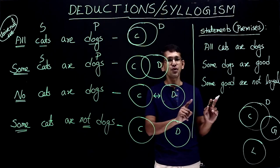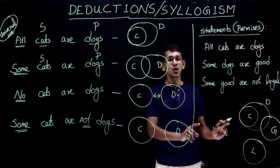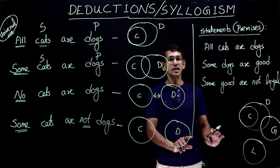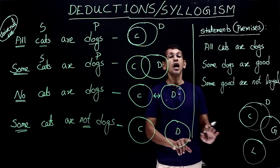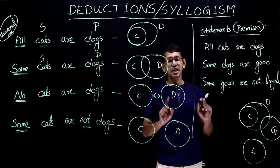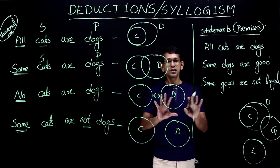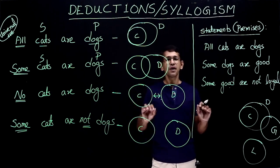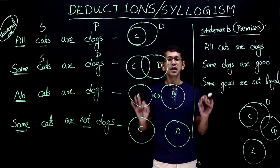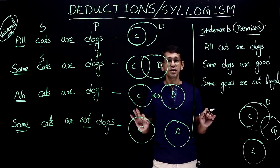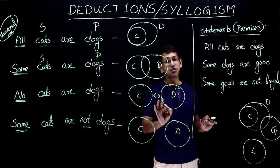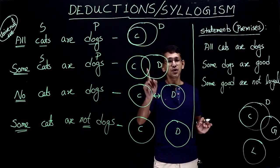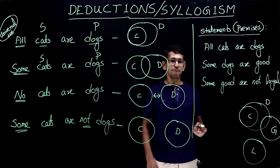After drawing the Venn diagrams, the next step is to look at the conclusions. The conclusions are not given here — that would be the next stage of deduction. This is the basic explanation of how to approach and solve deduction questions, which will be covered in the next video.